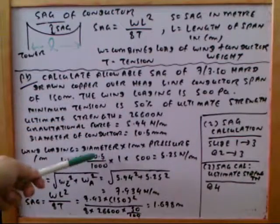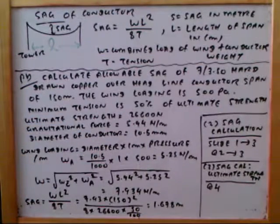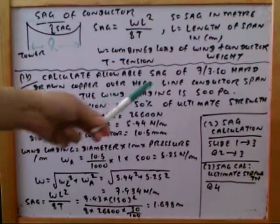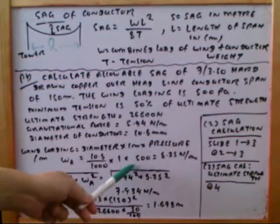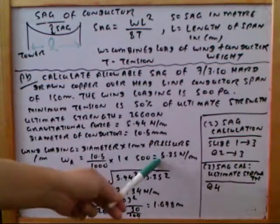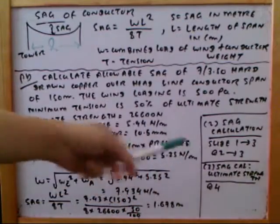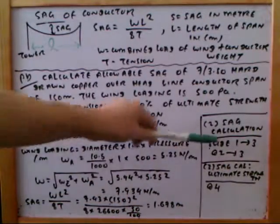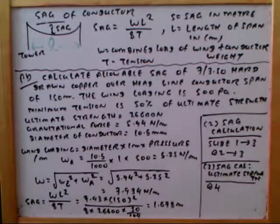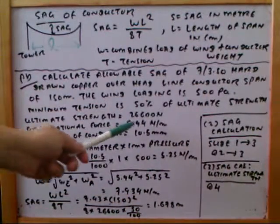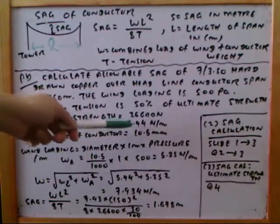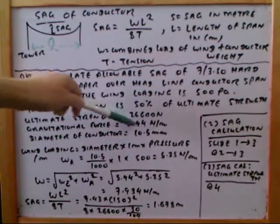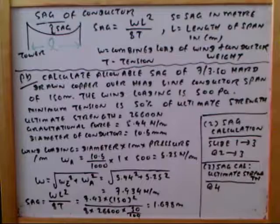The diameter is 10.5 millimeters, which is 10.5/1000 meters, multiplied by 1 meter and the wind pressure of 500 Pa. Solving this gives wa = 5.25 newton per meter. The horizontal wind force is 5.25 N/m, and the gravitational force wc is 5.94 newton per meter.